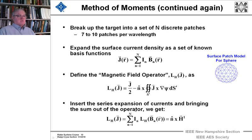And insert the series expansion of the current, bringing out the sum of the operator. In other words, what you do is you have for each of the pieces here, you have one of these equations. And you expand the series, bringing out the sum of the operator, and we get that L_H of J is this sum.